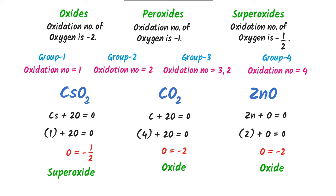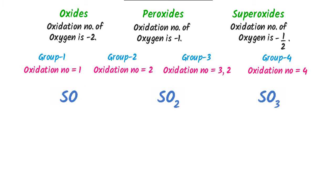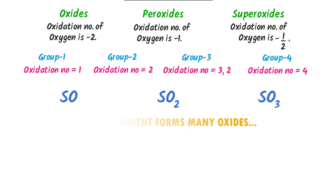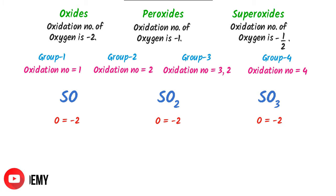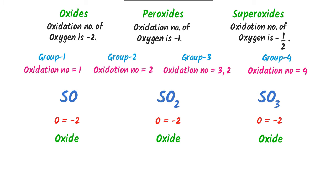Finally, let me teach you one premium question: find oxide, peroxide and superoxide in the following compounds. Remember that if one element forms a dioxide or trioxide, the oxidation state of oxygen will always be −2. So sulfur oxide, sulfur dioxide and sulfur trioxide are all oxides — they are neither peroxide nor superoxide. Thus by using this trick, we can easily find oxide, peroxide and superoxides.